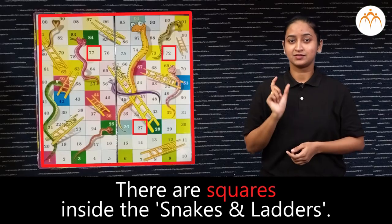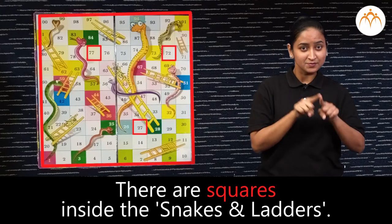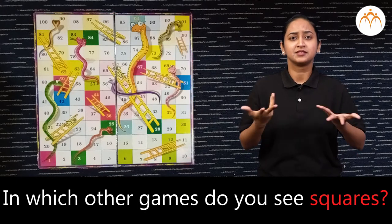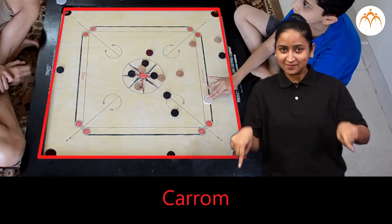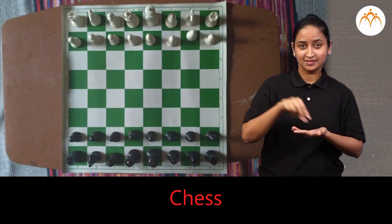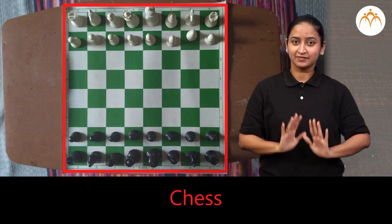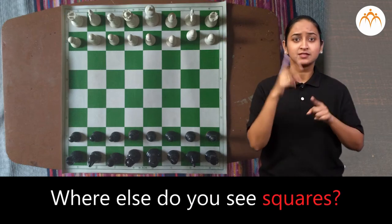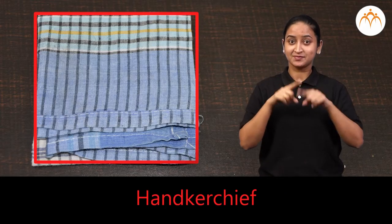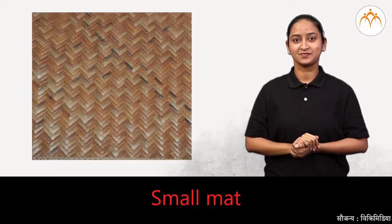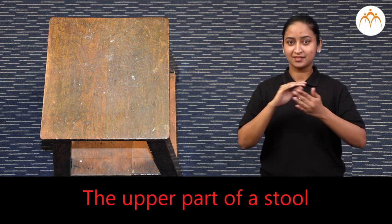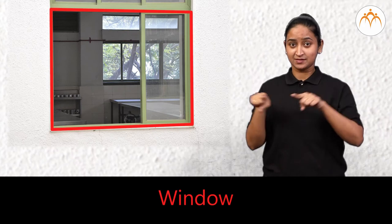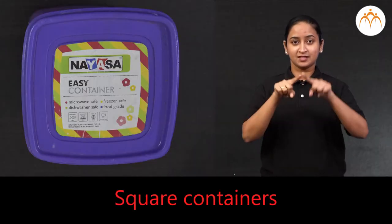There are squares inside the snakes and ladders. In which other games do you see squares? Carom, chess. Where else do you see squares? Handkerchief, small mat, the upper part of a stool, dice, window, square containers.